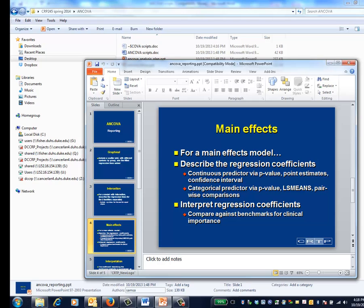For a main effects model, first demonstrate that the potential interaction term is non-significant, either statistically or clinically. Then refit a main effects model and focus on its parameters. In particular, describe your regression coefficients using point estimates, confidence intervals, and p-values.